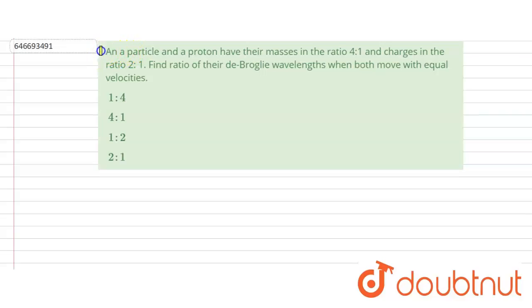The question is: An alpha particle and a proton have their masses in the ratio 4:1 and their charges in the ratio 2:1. Find ratio of the de Broglie wavelengths when both move with equal velocities.